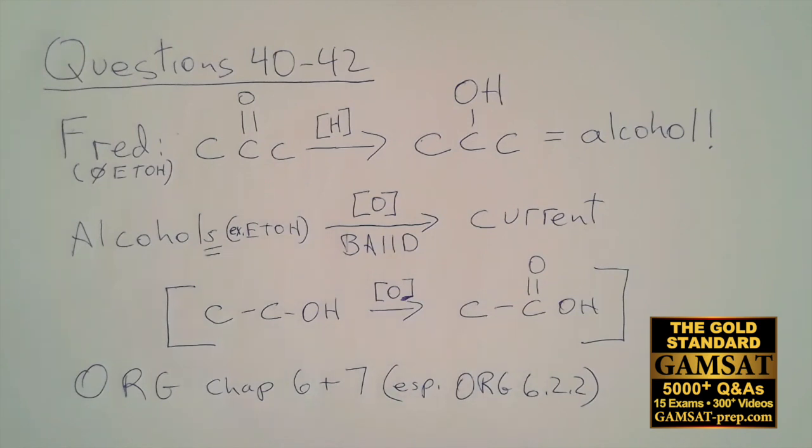In the second paragraph we learned about Fred's diet without alcohol, but his diet is producing this ketone and when it's reduced it can produce an alcohol. So now we know that there's something that Fred is creating that potentially can be picked up by BAID. It can be oxidized to produce current because BAID oxidizes alcohols.